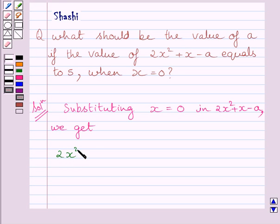2x² + x - A equals 2 multiplied by the square of 0 plus 0 minus A. We know this is the given algebraic expression and this is the given numerical value of x.